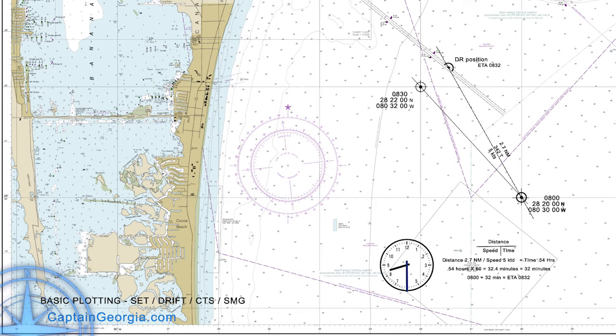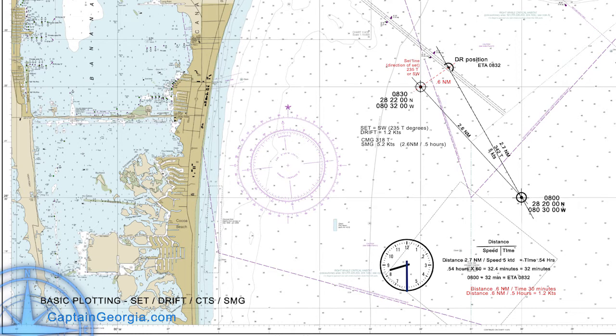So what is set and drift? Set is the direction we're pushed off course. Drift is the amount of distance or speed we're pushed off course. We take our trusty parallel rules, draw a line between the DR position and our actual position at 8:30, parallel over to our compass, and we find our set is 235 true — a southwest set. We measure with our dividers between the two points: 0.6 nautical miles divided by 0.5 hours equals 1.2 knots drift. Our course made good (CMG) is 318 true, and our speed made good (SMG) was 5.2 knots — 2.6 nautical miles divided by 0.5 hours.